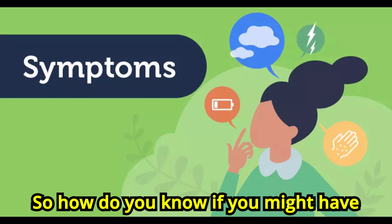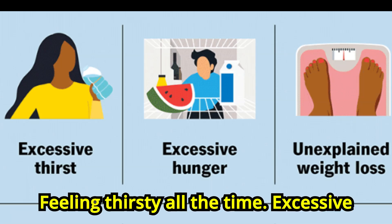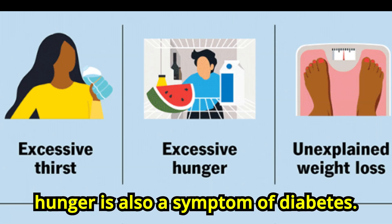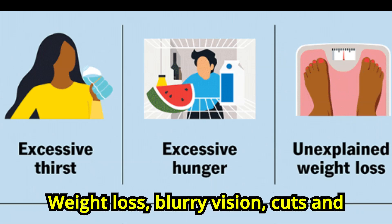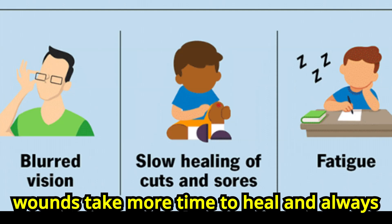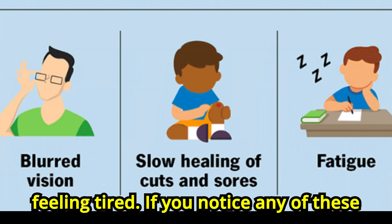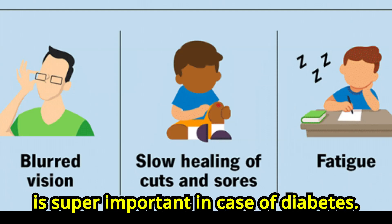So how do you know if you might have diabetes? Look out for these symptoms: feeling thirsty all the time, excessive hunger, weight loss, blurry vision, cuts and wounds that take more time to heal, and always feeling tired. If you notice any of these signs, talk to a doctor. Early detection is super important in case of diabetes.